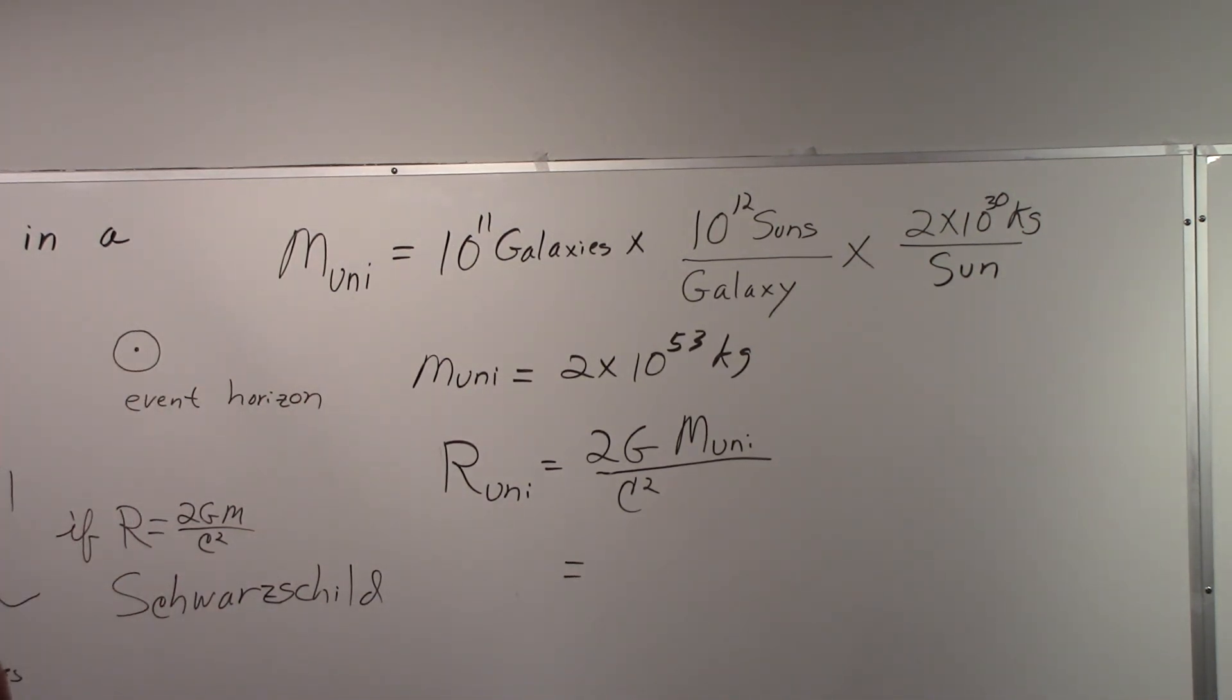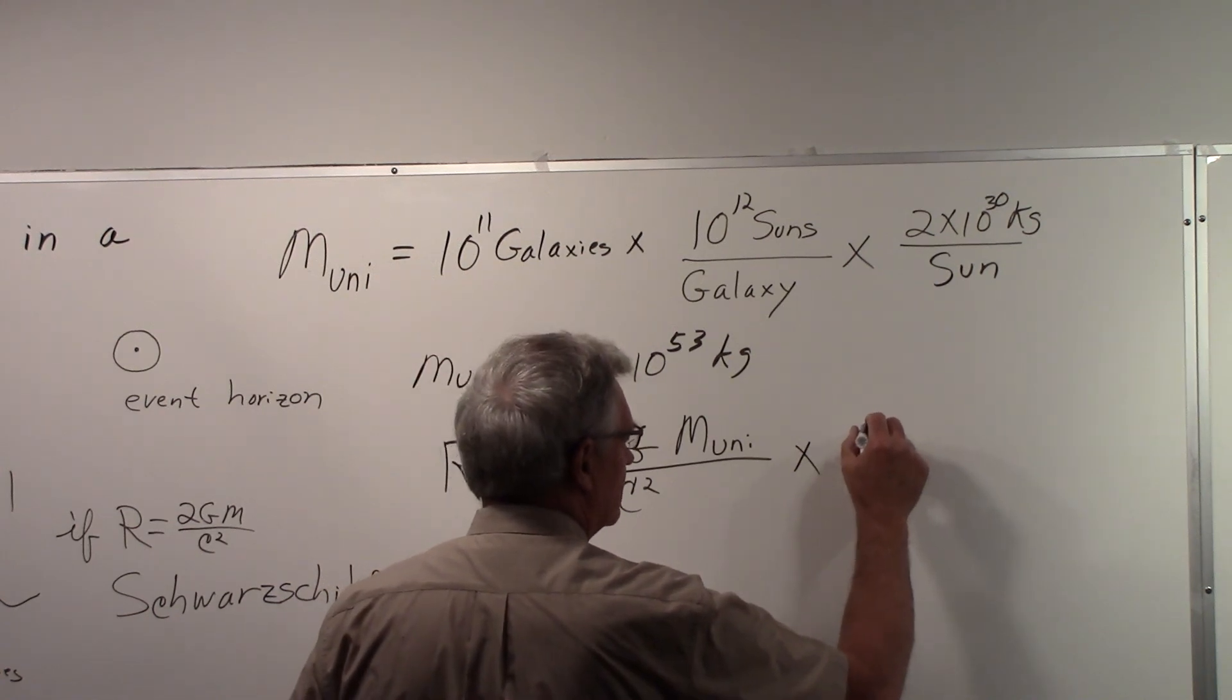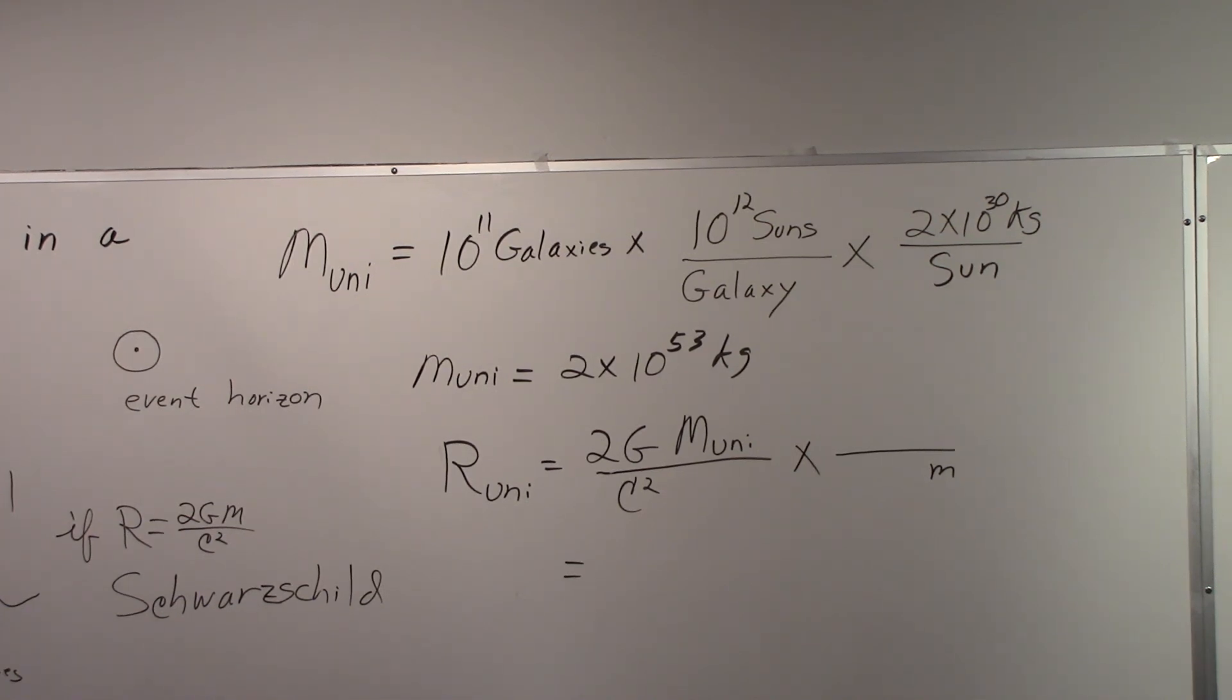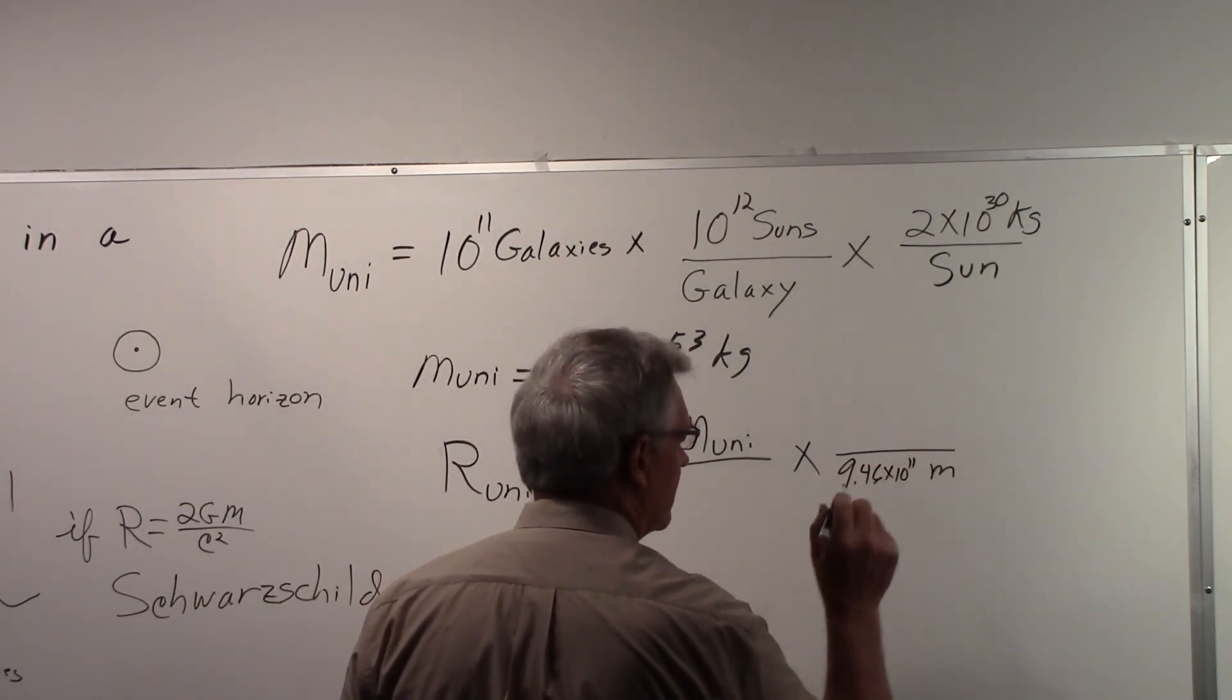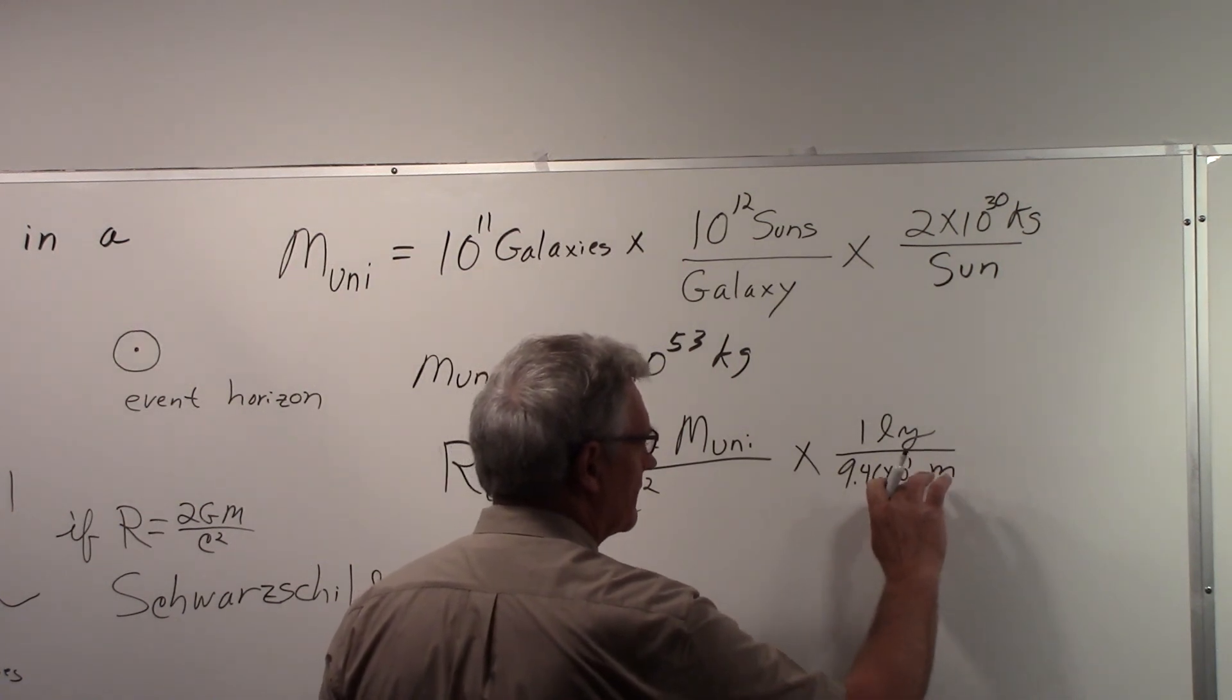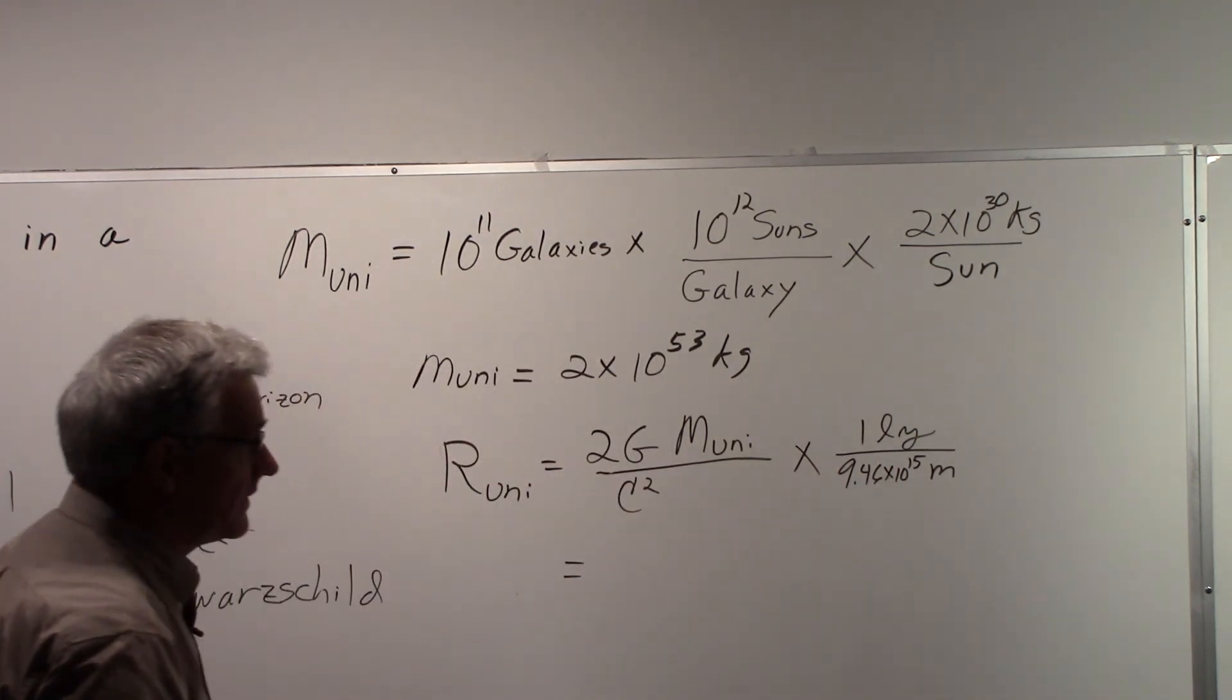And so what we really want to do here is convert this to light years. The units of this will be meters, and so the question is, how many meters are there in a light year? And it's 9.46 times 10 to the 15th meters in one light year.